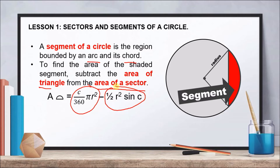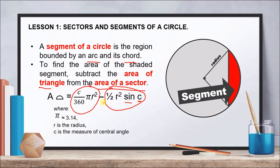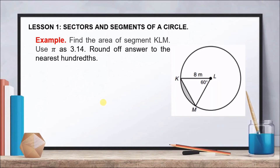The derived formula for the area of a segment comes from an isosceles triangle that can be formed within the circle. You will need to recall trigonometric ratios, specifically the sine function, and you can use your calculator. Let's go to the example: we are going to find the area of segment KLM — the shaded part of our circle — using π = 3.14.